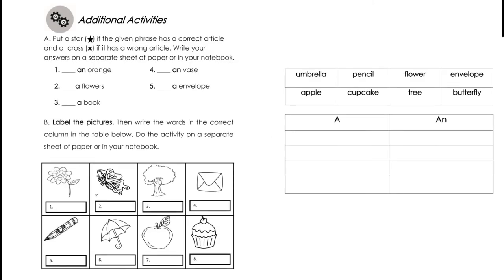Additional Activities. Put a star if the given phrase has a correct article, and a cross or X if it has a wrong article. Write your answer in the blank. Number 2: A flowers. Number 3: A book. Number 4: An vase. And Number 5: An envelope.